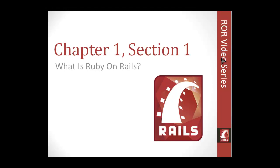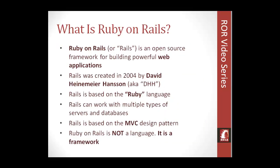In Chapter 1, Section 1, we're going to learn what exactly Ruby on Rails is and what it's used for. Ruby on Rails, which I'll be referring to as Rails, is an open source framework for building powerful web applications. It is not a programming language. Rails is a structure, a framework to build web apps using the Ruby programming language. Ruby is the actual language, not Ruby on Rails.